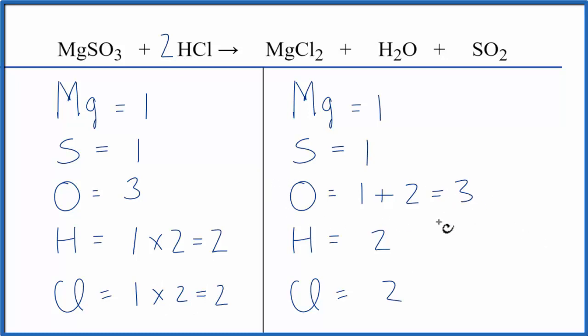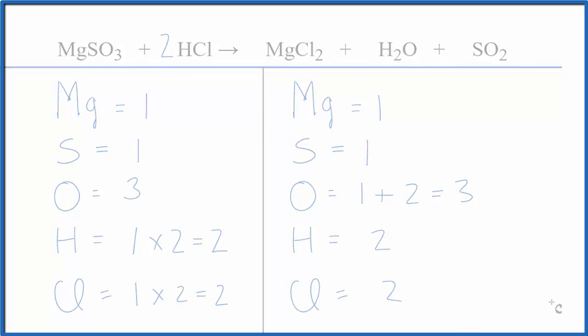The key here, make sure you count the oxygens up accurately, otherwise this becomes more challenging to balance. This is Dr. B with the balanced equation for MgSO3 plus HCl. Thanks for watching.